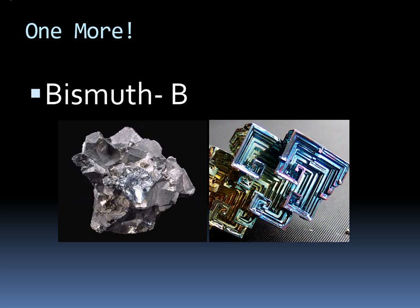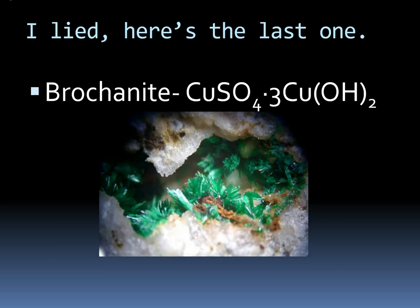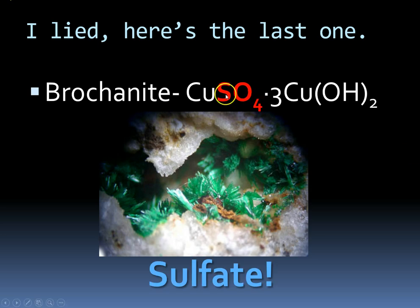One more: bismuth. You've probably seen these for sale. The picture on the right is actually lab-created — you can buy bismuth and grow these crystals in your kitchen. On the left is what it looks like in nature. Bismuth is a native element because it's just made of one element. And one more: brochantite, another copper mineral found in Arizona. It's a sulfate because it has sulfur and oxygen. You'll also notice the OH, which makes it a hydroxide too, but we won't worry about those for now.